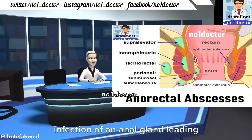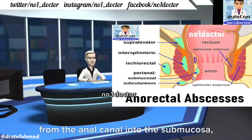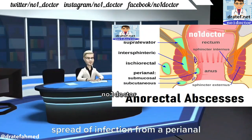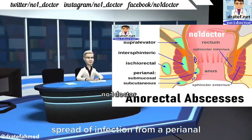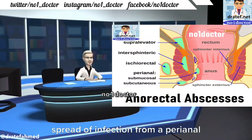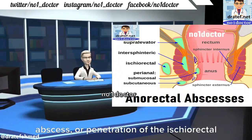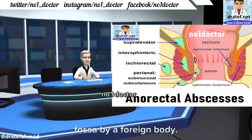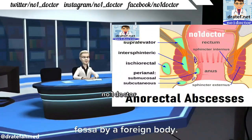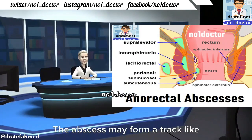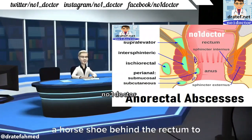Also from infection of an anal gland leading from the anal canal into the submucosa, spread of infection from a perianal abscess, or penetration of the ischiorectal fossa by a foreign body. The abscess may form a track.